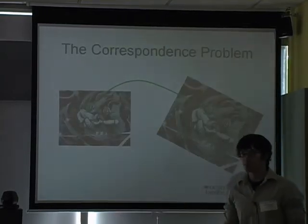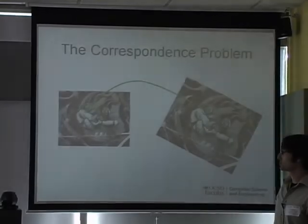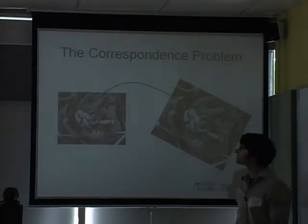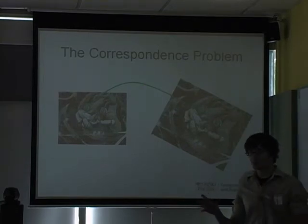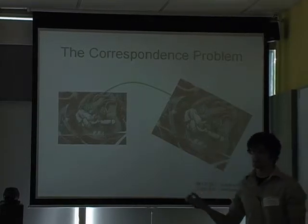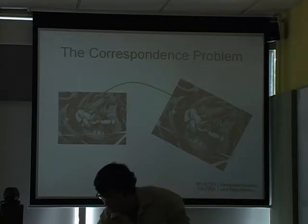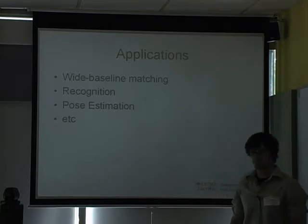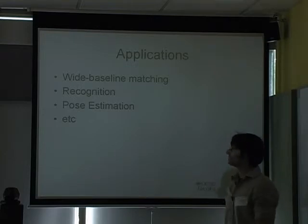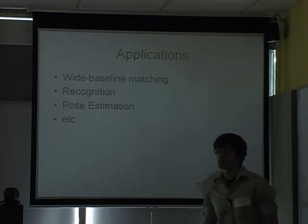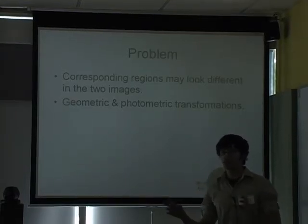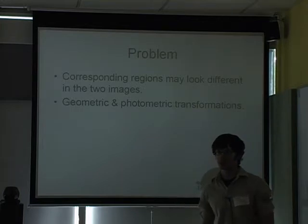The general problem I'm going to be talking about is what's known as the correspondence problem in computer vision. It's when you have two or more images of the same object or the same scene, and you want to find pairs of corresponding points — points that correspond to the same physical point. There are many applications for this, like 3D reconstruction and recognition. The challenge is that corresponding local image regions might look substantially different due to geometric and photometric transformations.